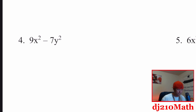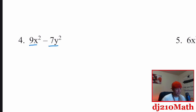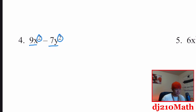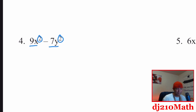Number four: there's no number common to both nine and seven, no X common to both, and neither is a Y. Now, it almost looks like a difference of squares, but it doesn't — because seven can't be rewritten as something squared. We don't know how to do that yet. So, no GCF.